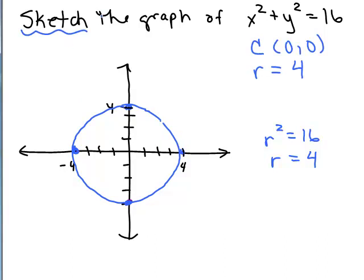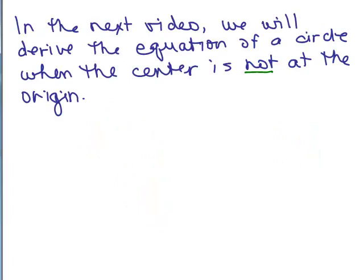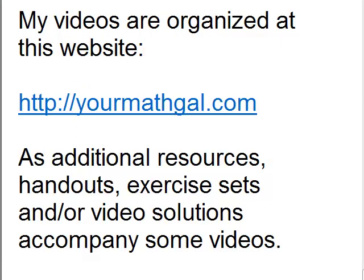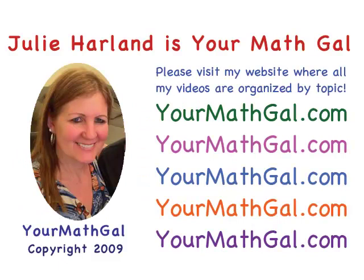So that's what we've done here — only talked about circles centered at the origin. In the next video we'll derive the equation of a circle when the center is not at the origin, so we'll get a slightly different formula. The idea is the same: if we know the center and the radius, we'll be able to write the equation of the circle. If we're given an equation in standard form, we'll be able to figure out what the center and radius are. Make sure you keep watching this series of videos on equations of circles. Please visit my website at yourmathgal.com where you can view all of my videos organized by topic.